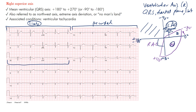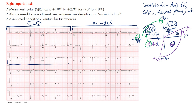This upper region is right superior axis, also called northwest axis — because this direction is north and this is west, so everything here is northwest. It's also called extreme axis deviation. This region is no man's land because not much lies there. Ventricular tachycardia is one thing we can see there, which is helpful in differentiating it from other wide complex arrhythmias.